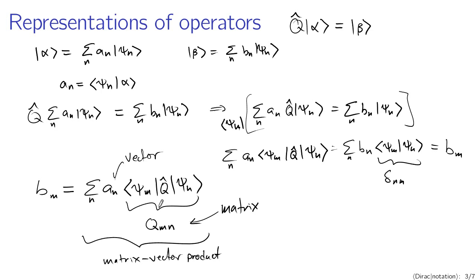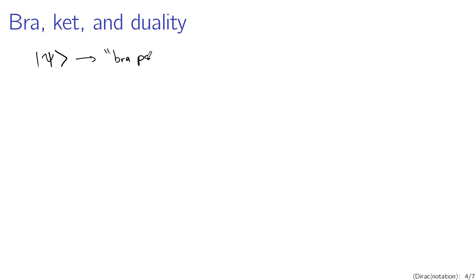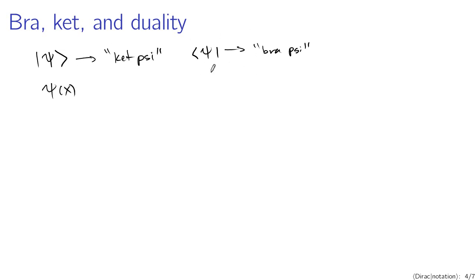That is immensely useful. To go a little further down the rabbit hole: there is actually a deeper mathematical structure. The state psi with a vertical bar on the left and angle bracket on the right is called ket psi, whereas the state with angle bracket on the left and vertical bar on the right is called bra psi. These things actually represent different mathematical entities. If you're thinking about ket psi in terms of wave functions, this is psi of x. Bra psi in terms of wave functions is psi star of x.